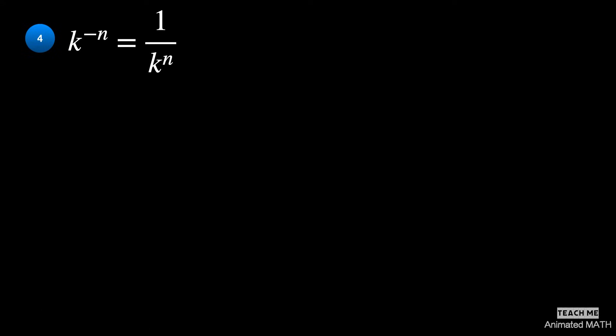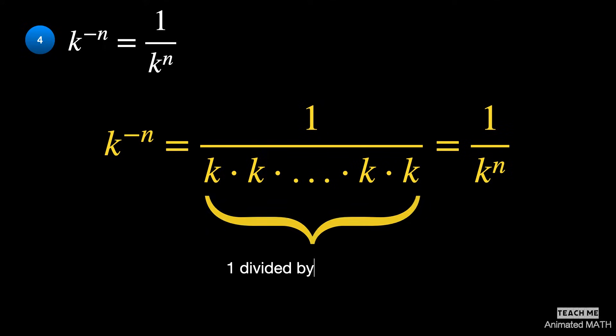The fourth property: a negative exponent means that you'll have to do division. Given k to the negative n, how many times do you have to divide 1 by k? The answer is n times.